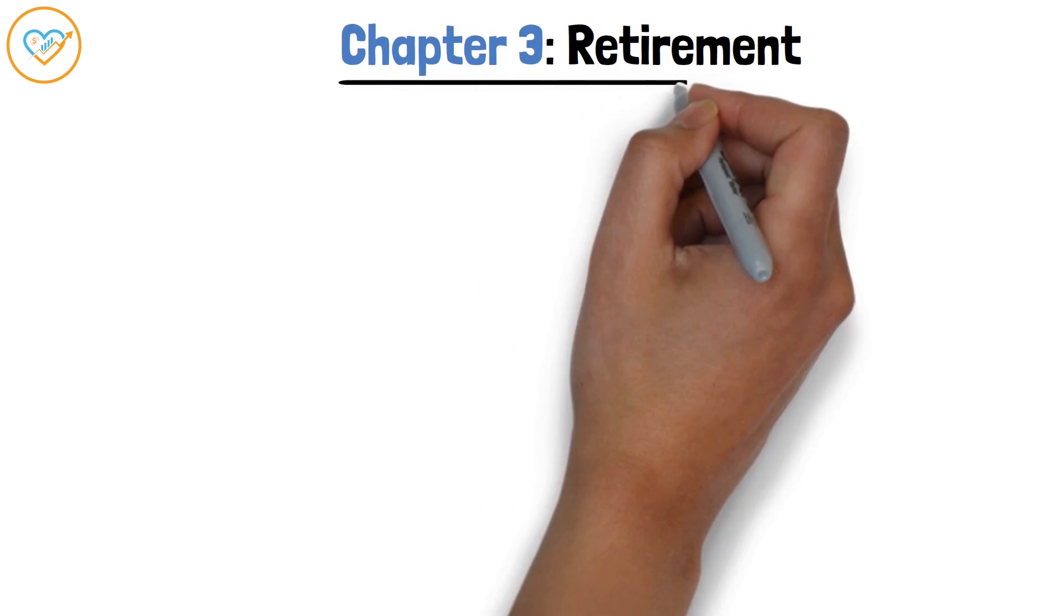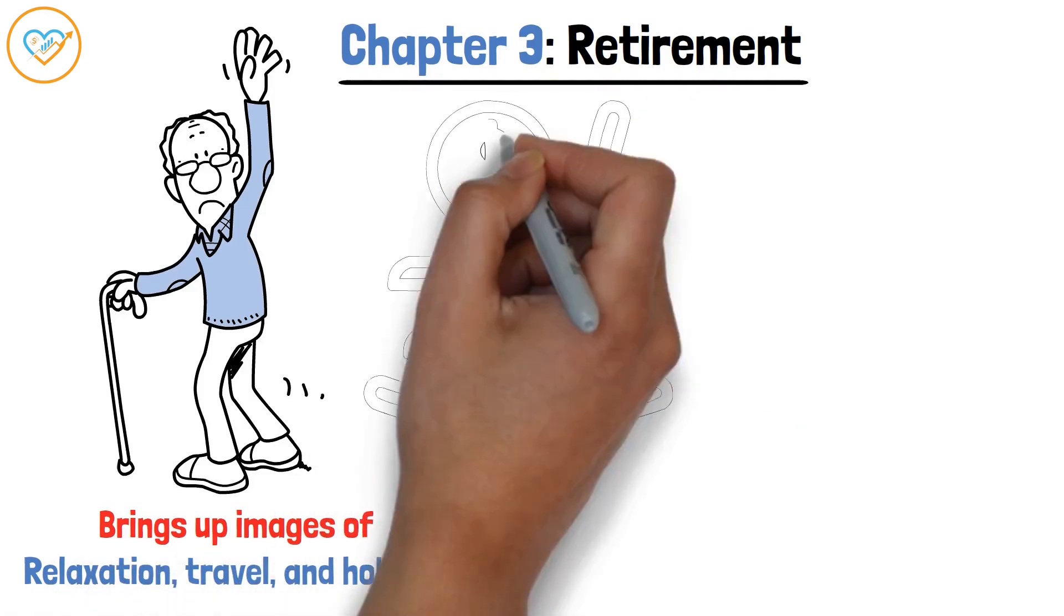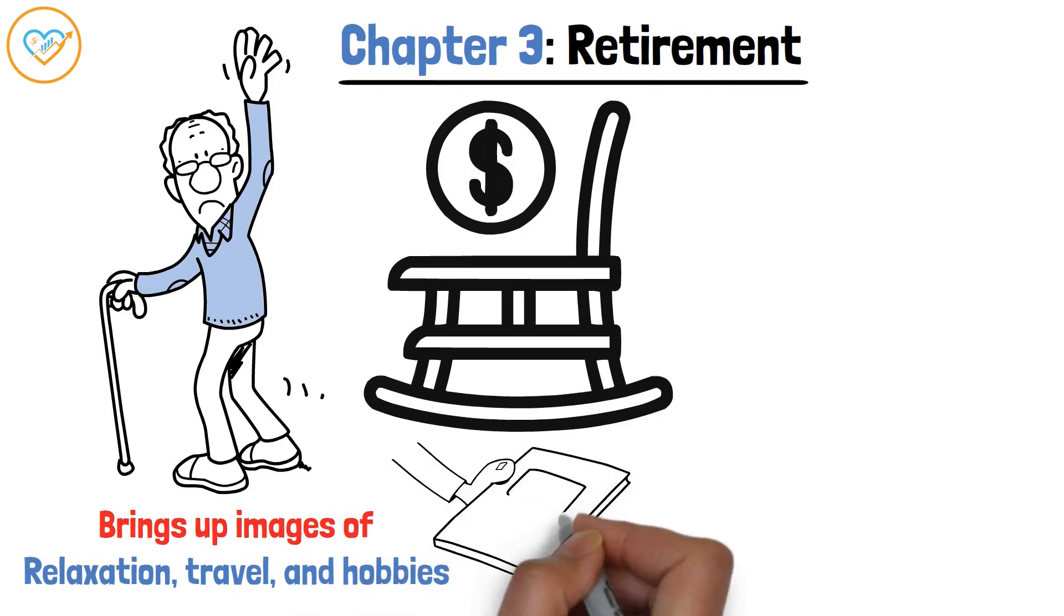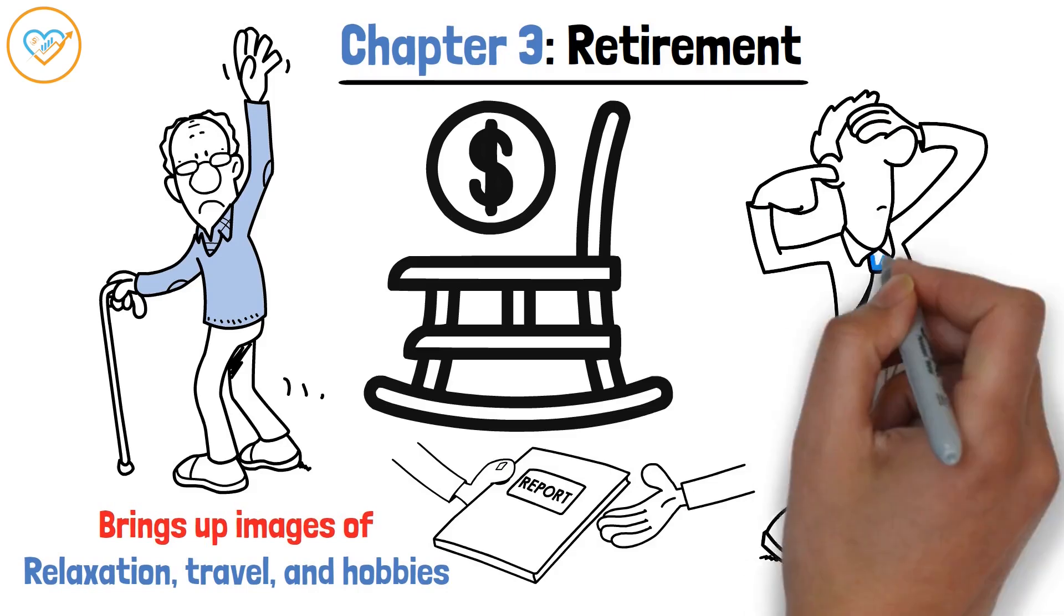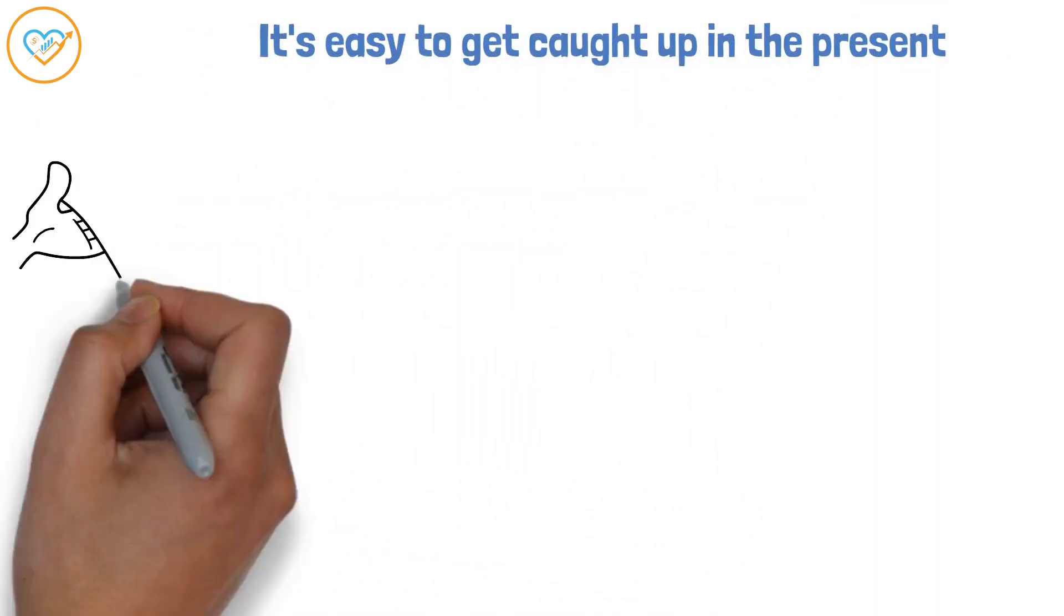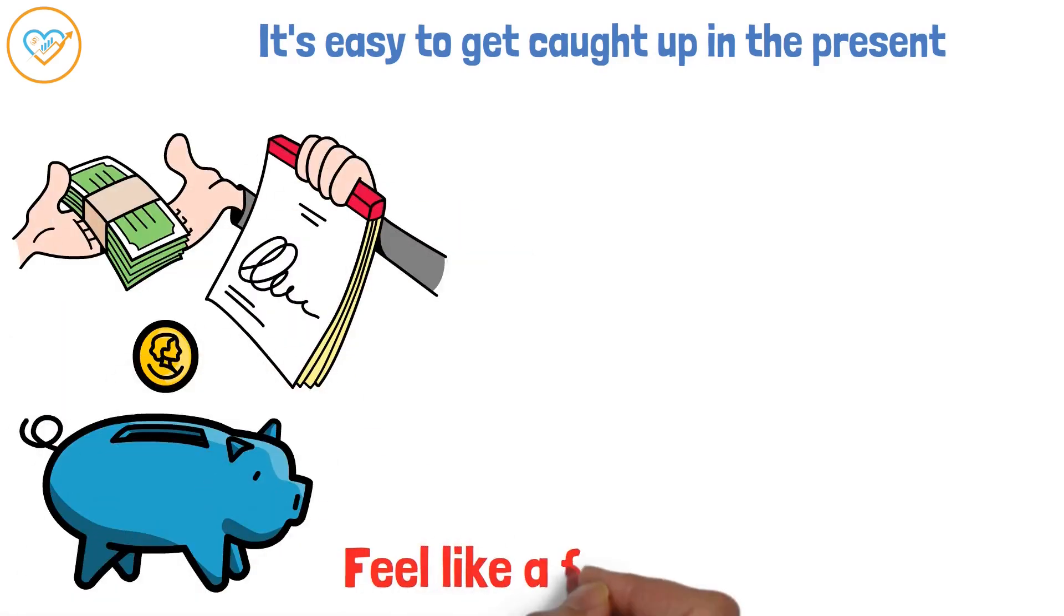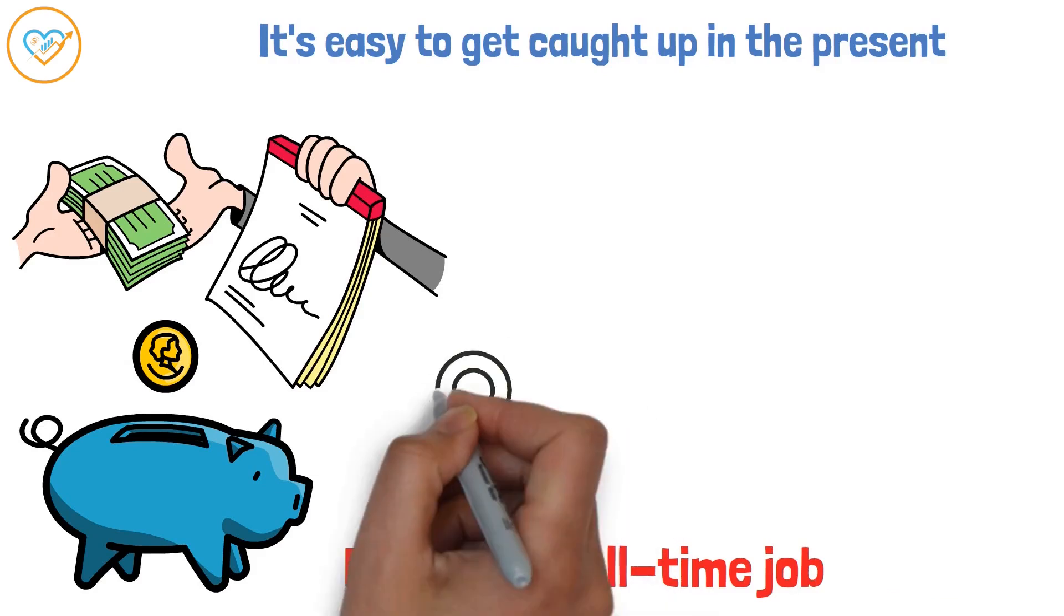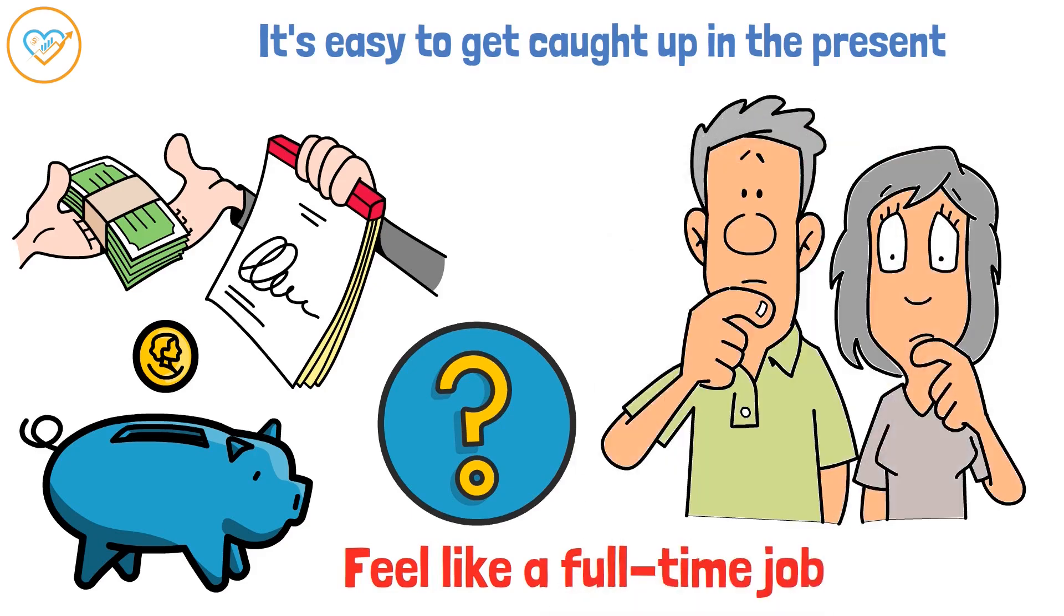Chapter 3: Retirement. Retirement. It's a word that often brings up images of relaxation, travel, and hobbies. But the reality is, retirement is a financial reality that requires careful planning. Yet, so many people ignore this crucial aspect of their financial life. It's easy to get caught up in the present. Paying bills, covering monthly expenses, and saving for short-term goals can feel like a full-time job. But what about your future self? Will they be able to enjoy the same lifestyle without a steady income?